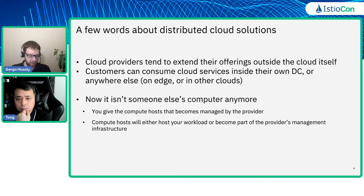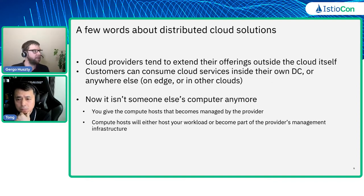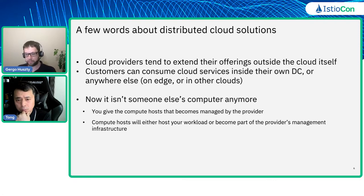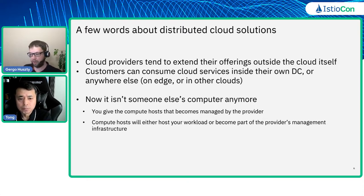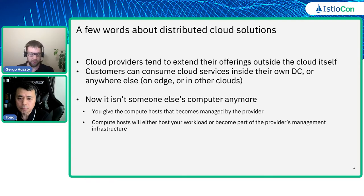So, distributed clouds. Many cloud providers are going to extend their cloud offerings outside of their data center. It's not anymore 'someone else's computer,' right? You can run and consume public cloud services in your data center or actually anywhere else. This is what IBM Cloud Satellite or Google Anthos is about. You provide the infrastructure and the cloud provider provides the service on top. Some of your workload will become part of the provider's infrastructure, while most of your compute — your Kubernetes nodes or other workloads — will still be yours.